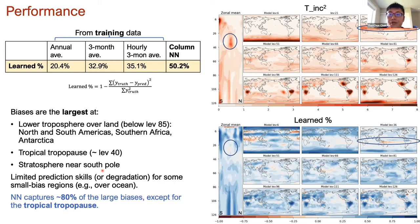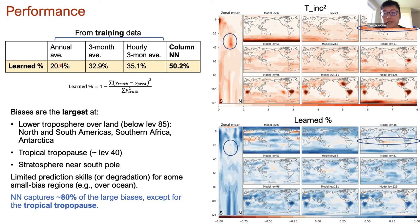We created a few baselines to assess neural network performance. From training data we computed annual average, three-month running average, and three-month running average for each hour of the day. The metric measures how much of the target is predicted: 100% is perfect, 0% means no harm nor gain, and negative means the bias correction harms the forecast. Using annual mean, we already get 20%. Including seasonal cycle gives 33%, adding the diurnal cycle gives 35%, and using the neural network we relate 50% of the analysis increment to our input.